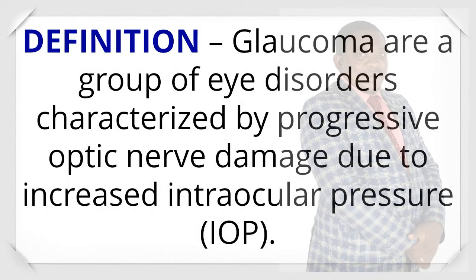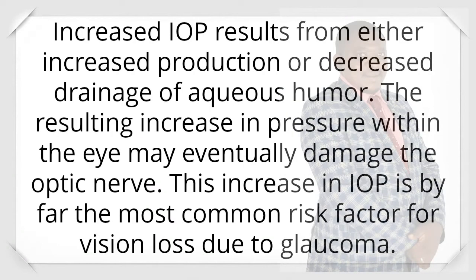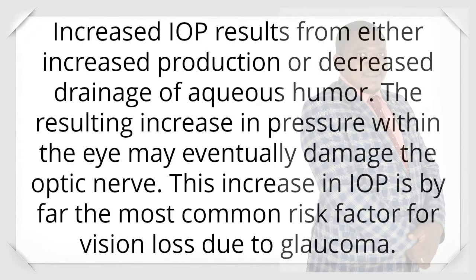Definition: Glaucoma is a group of eye disorders characterized by progressive optic nerve damage due to increased intraocular pressure (IOP). It is an eye disorder characterized by high IOP and optic nerve damage that affects peripheral vision. Increased IOP results from either increased production or decreased drainage of aqueous humor. The resulting increase in pressure within the eye may eventually damage the optic nerve. This increase in IOP is by far the most common risk factor for vision loss due to glaucoma.